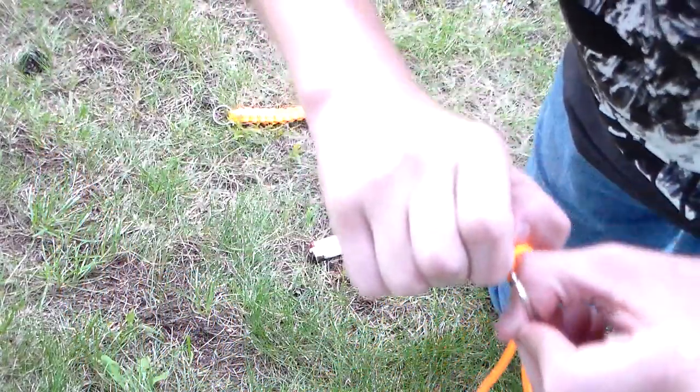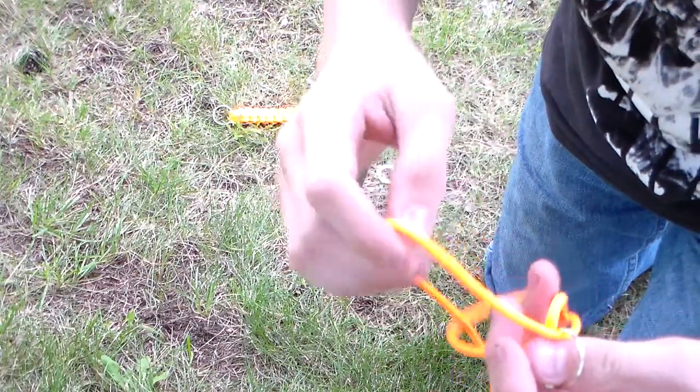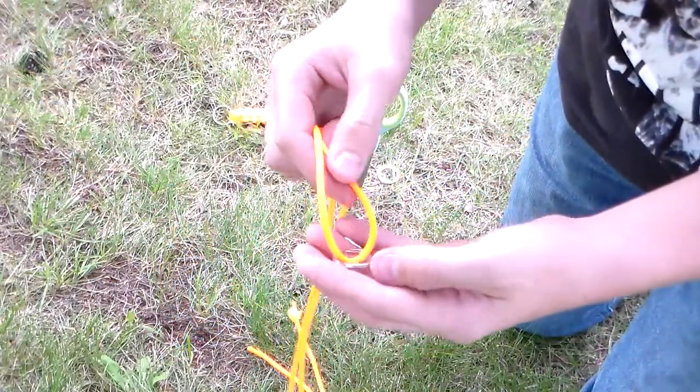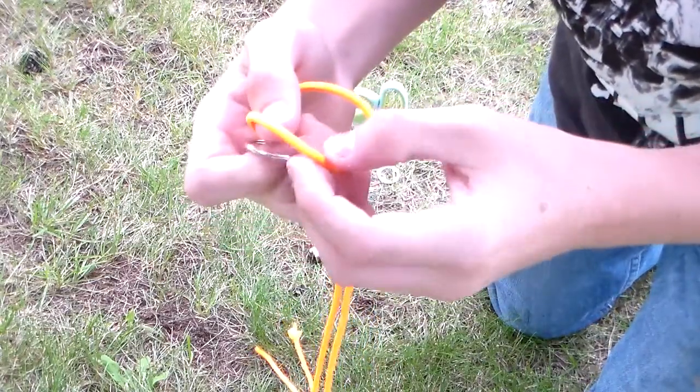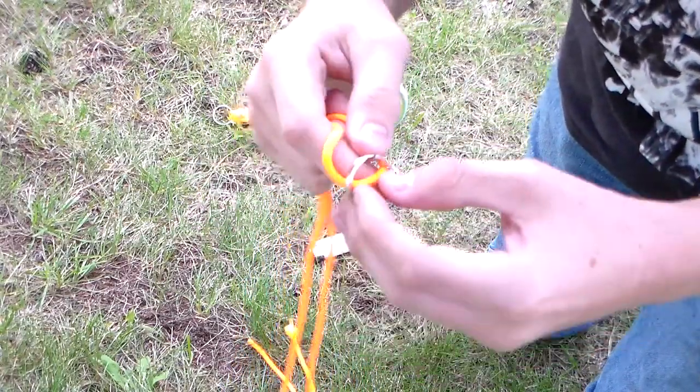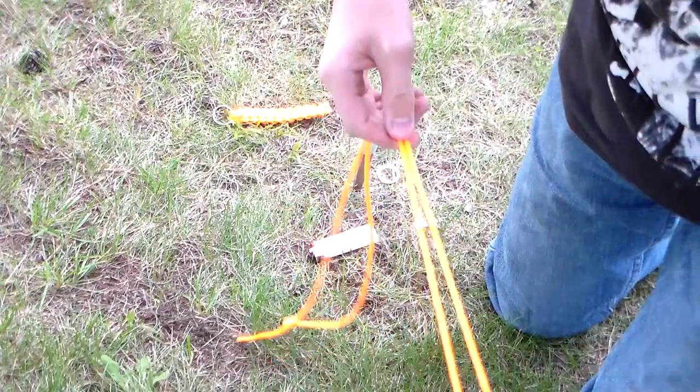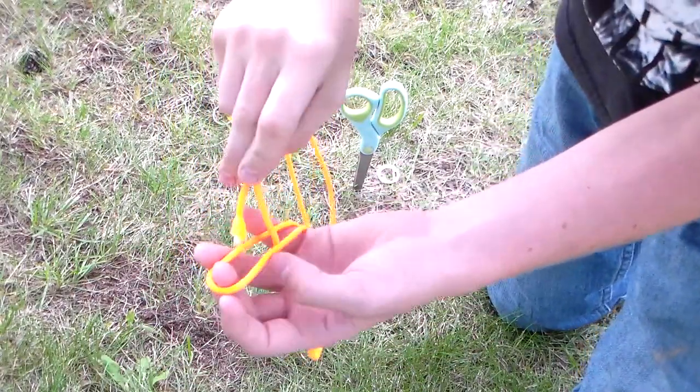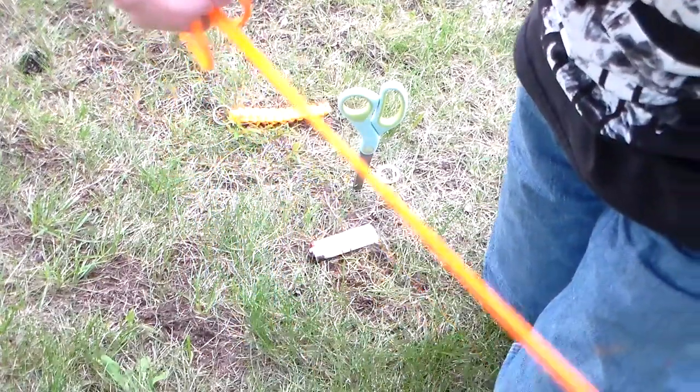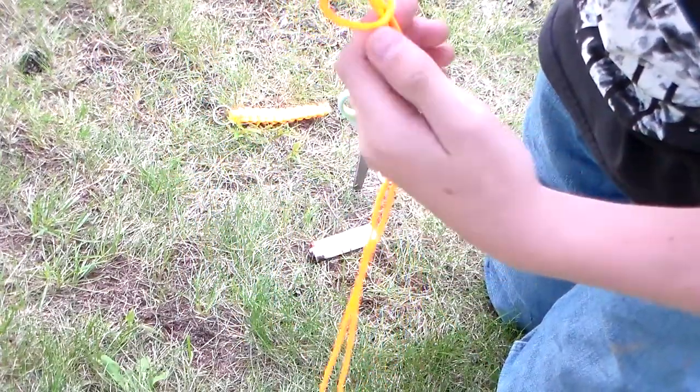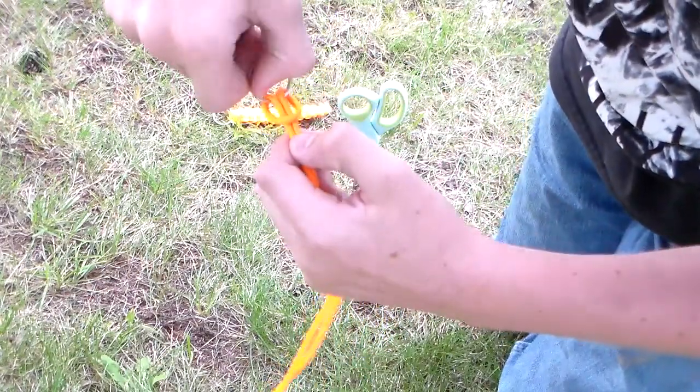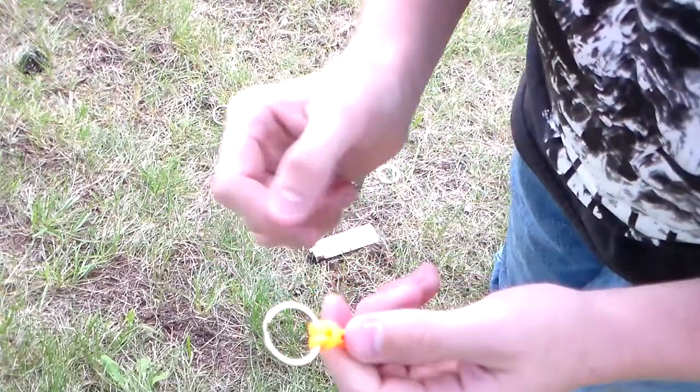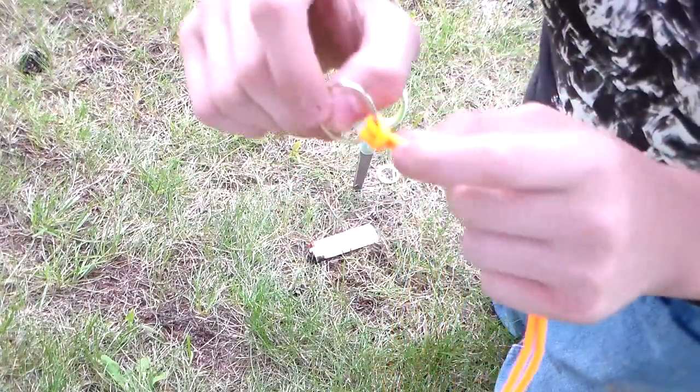Or you can just do it another way. So you could also put this key ring here on the paracord if I can get it through there. There we go. And then you take your key ring, put it all the way down at the end. Now take your two ends and put it through the loop and pull it up tight. And then you'll have something that looks exactly the same as what we did before. I like to do it the other way, the first way I showed you because it's a lot quicker. It's a lot easier too.